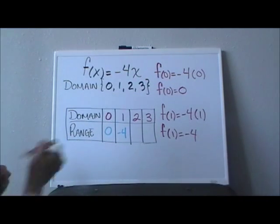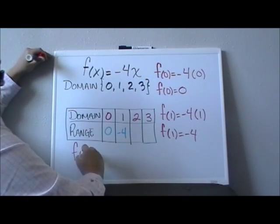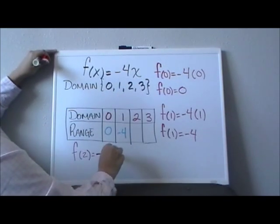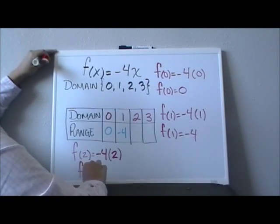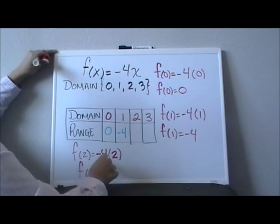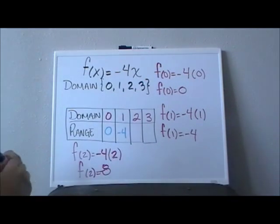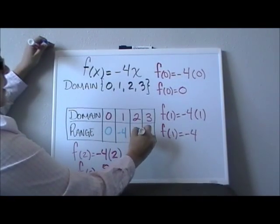Now I have to find my f of 2. So again, negative 4, and instead of the x I will write parenthesis 2. f of 2 equals negative 4 times 2, gives me negative 8. So this will be negative 8.